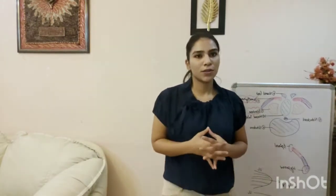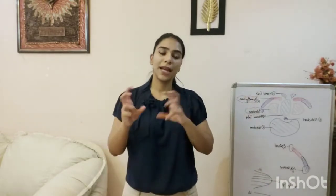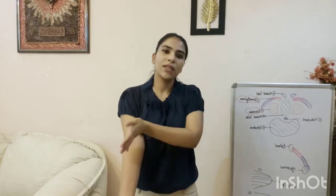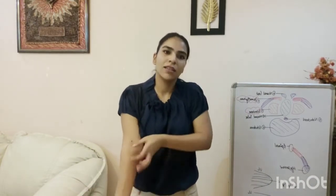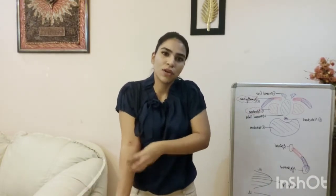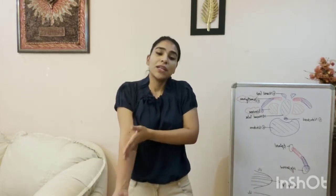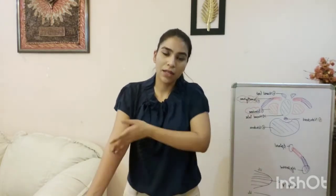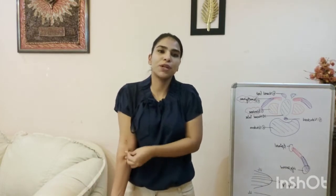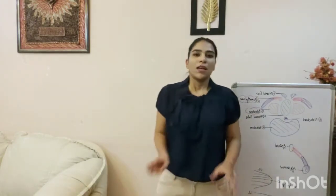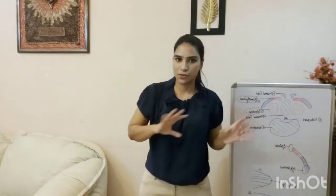What is congenital radio ulnar synostosis? It is radio ulnar synostosis, meaning between the radius and ulna there is an osteosis — a fusion has formed. It is not able to divide properly and there is still a fusion between the radius and ulna. This is radio ulnar synostosis.